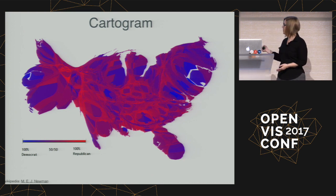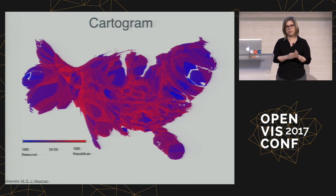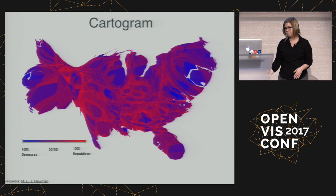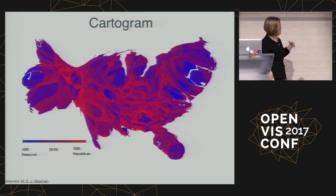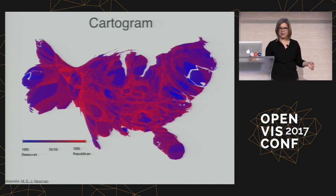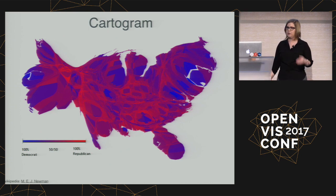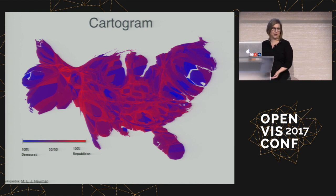So people make cartograms. This one, I think from the 2004 presidential election, takes the counties and sizes the shapes based on population, then colors them based on whether people voted Democrat or Republican. This might give you the idea that we're not as divided as we thought, but it's very hard to look up any results. If you want to find your county and see how it voted, you better live in Los Angeles County.